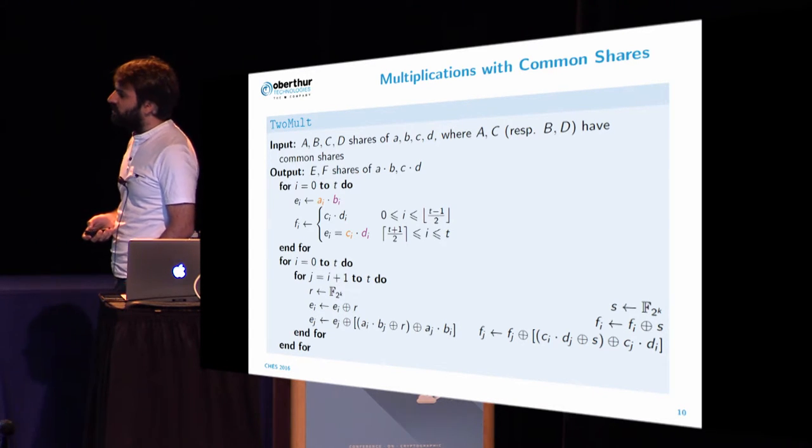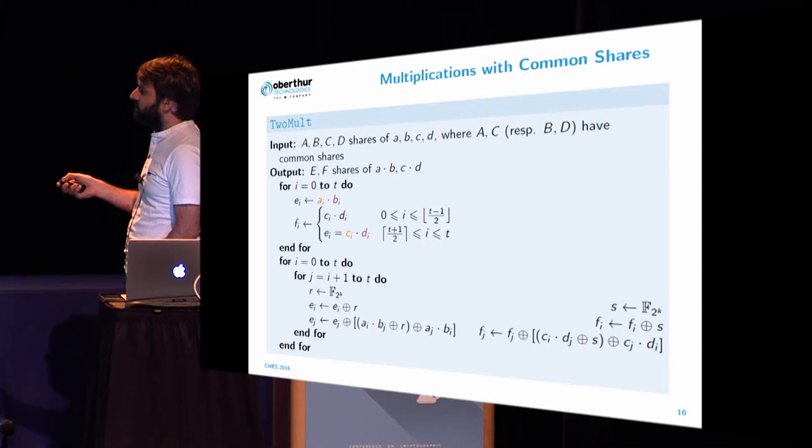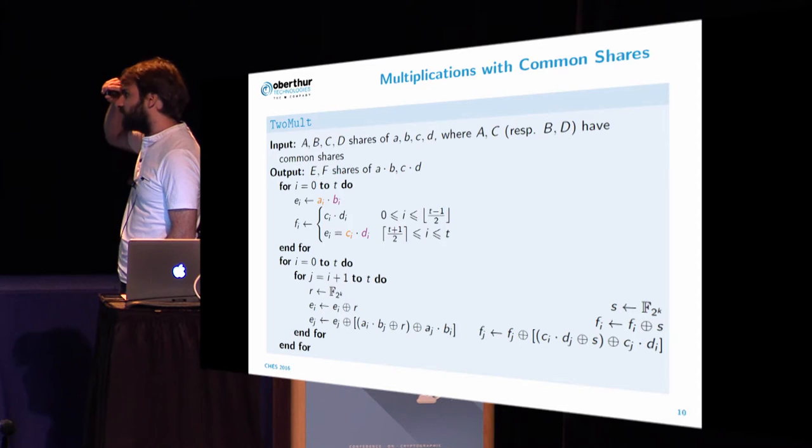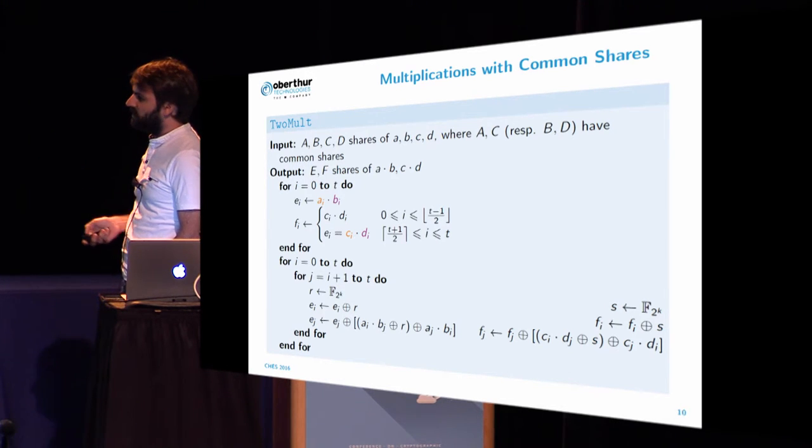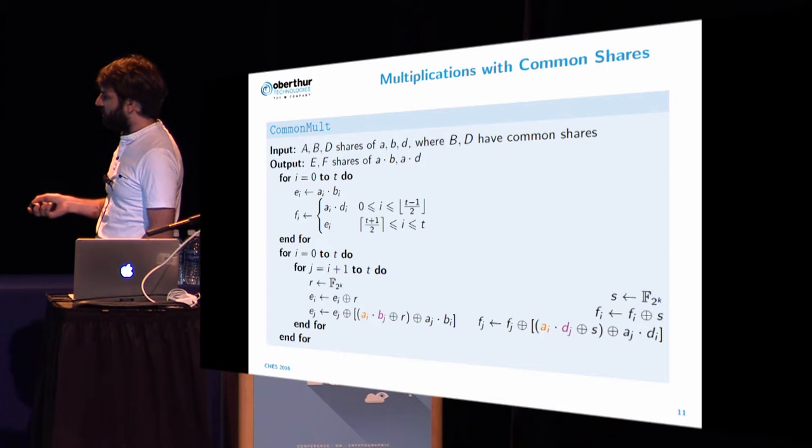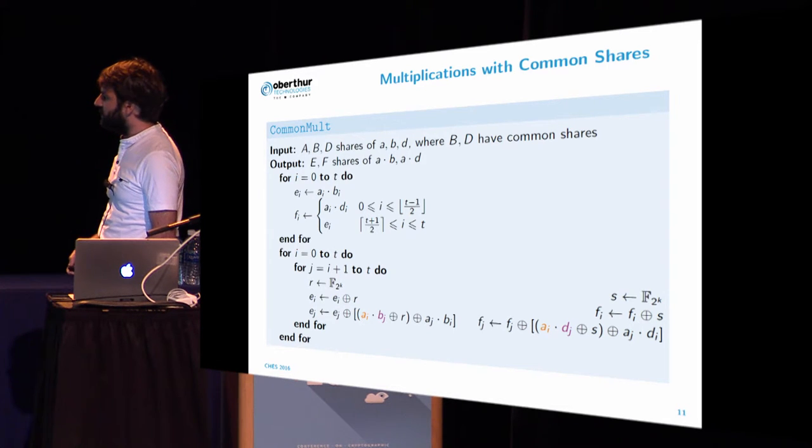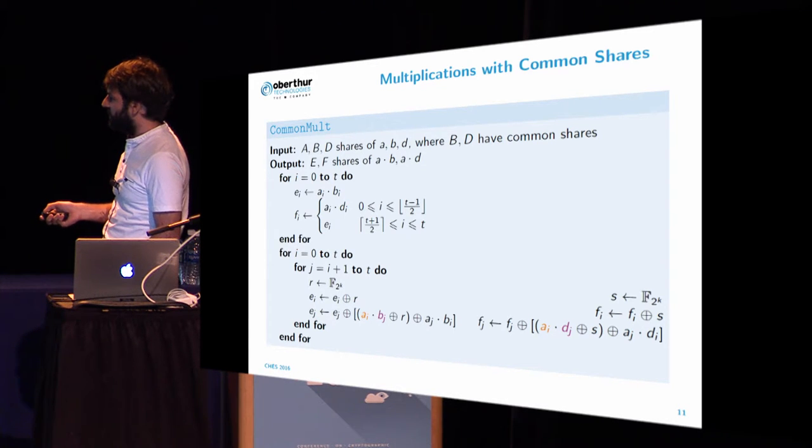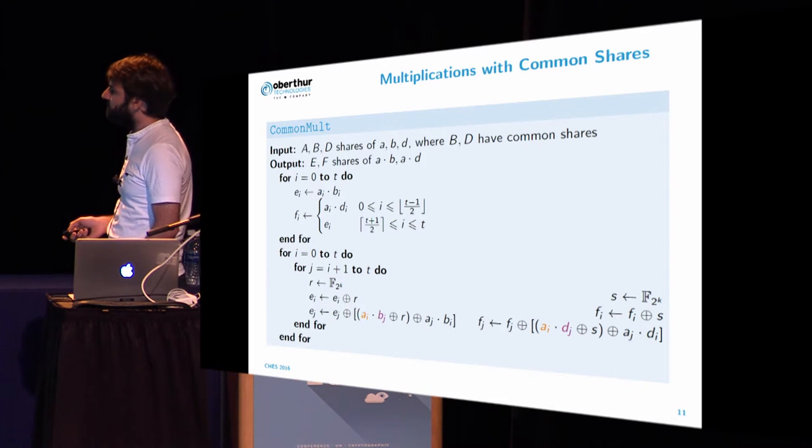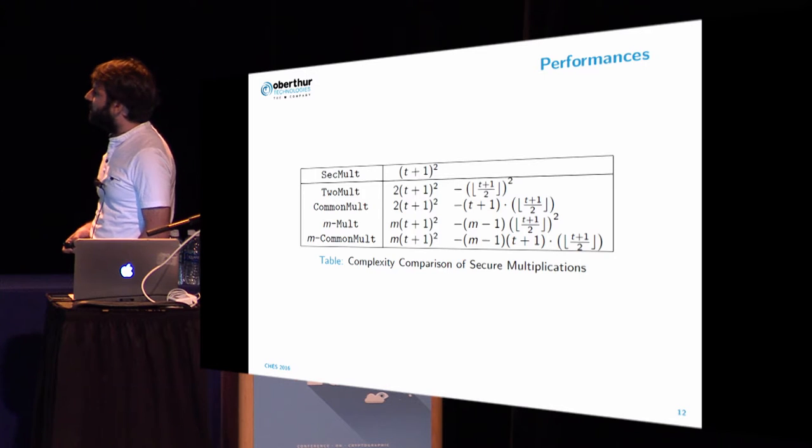So this is for the general case when we have four variables A, B, C, D, but we can also look at what we will have in the case where C is equals to A, and we will be able to save more computations. Again, we will have the saving for the products Ai times Bi, but we will have more savings in the products Ai times Bj since now we don't have Ci—we have Ai here. So for all the high values starting from j which is higher than T plus one over two, the products will be the same and they will be computed once.